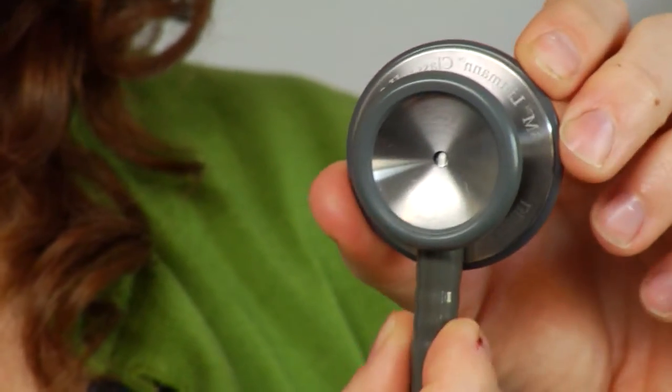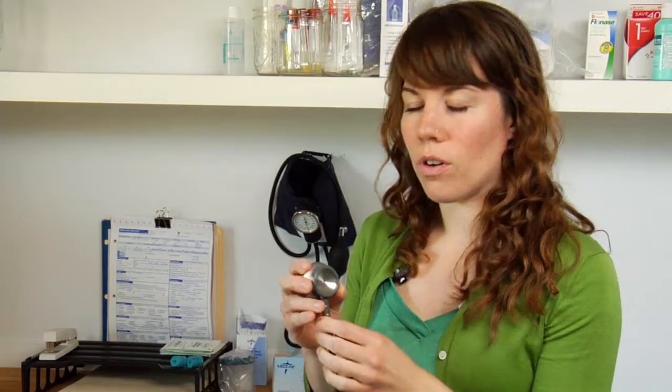So a lot of times, if you're in the ICU or you're doing general medical surgical or intermediate care, you're probably going to want a diaphragm as well as an open bell so that you can best auscultate both the lungs as well as the heart.